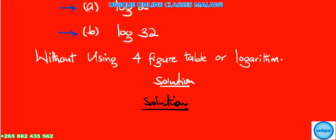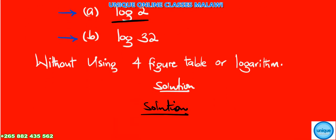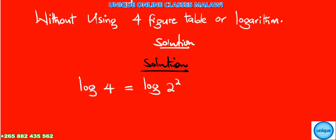We need to express log of 2 in terms of the given value. Log of 4 can be written as log of 2 squared, which equals 2 times log of 2. So we can write that as one times log over two.